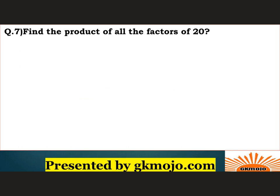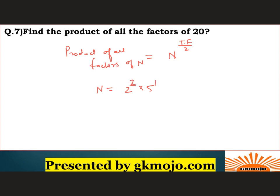Last question: find the product of all factors of 20. Using the formula, product of all factors = N^(total factors / 2). Prime factorization of 20 = 2^2 × 5^1, so total factors = (2+1)(1+1) = 6. Product = 20^(6/2) = 20^3 = 8000. So the product of all factors of 20 is 8000.